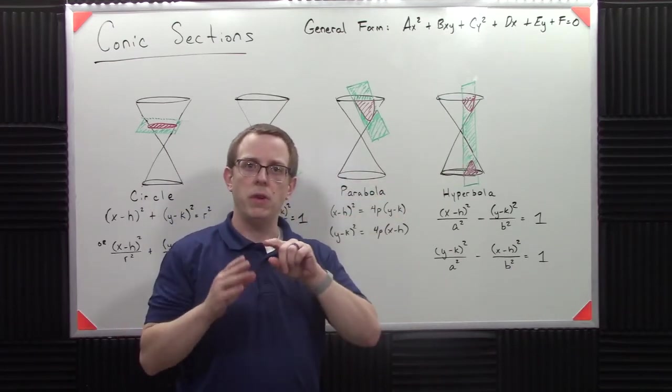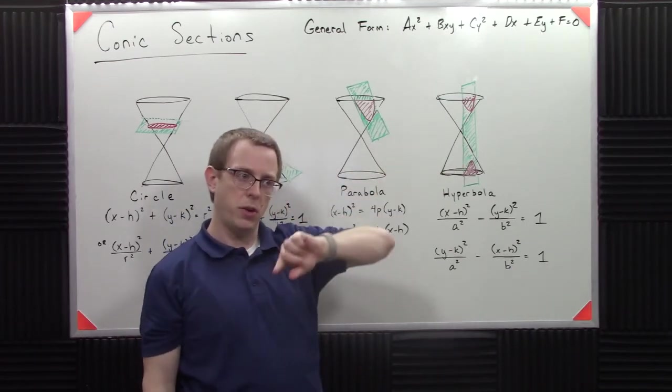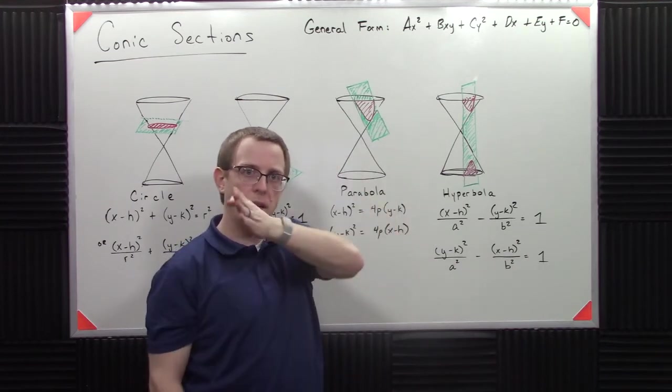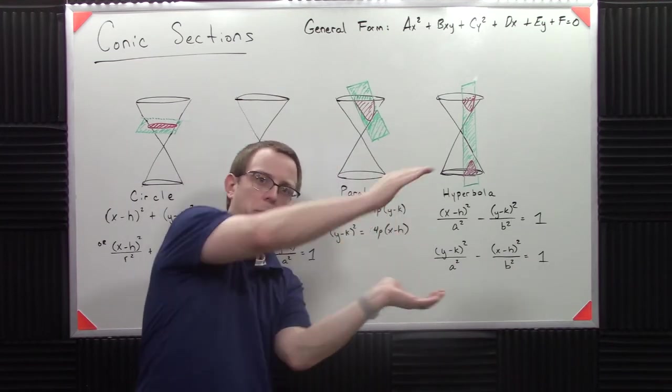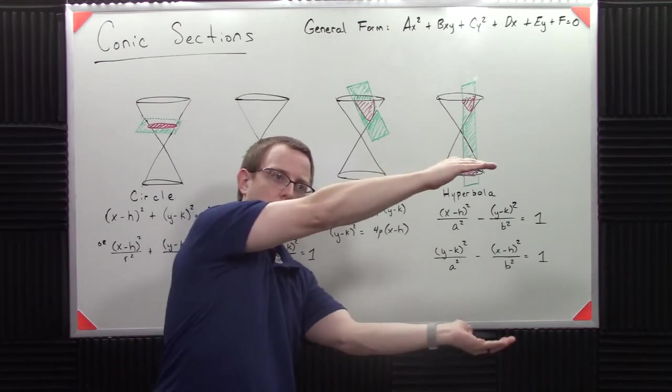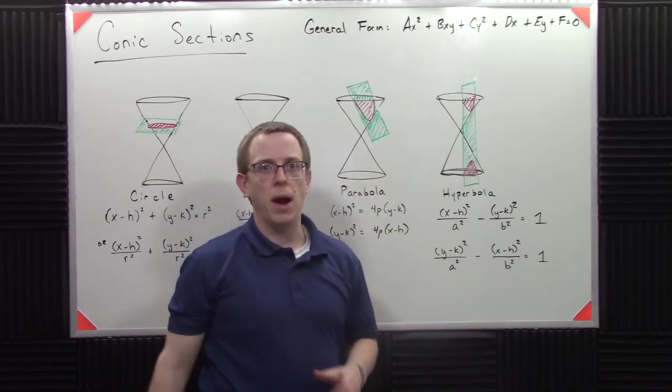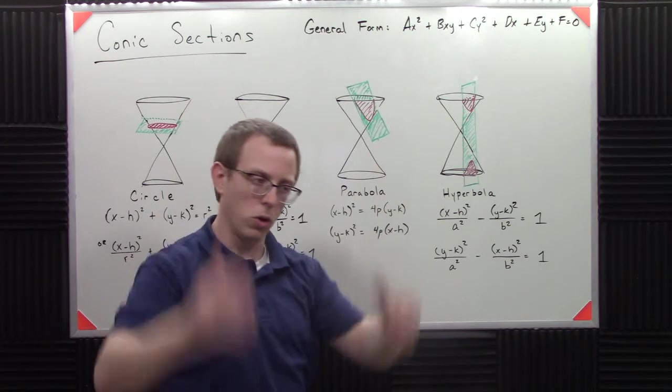Think like, if you have y equals square root of x, you know, you kind of have half a parabola. Imagine if you filled that all the way out. So that would be like x equals y squared. That would be your parabola that opens horizontally as opposed to opening vertically.